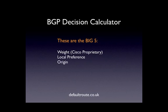Next is origin — how did that route get into the BGP RIB in the first place? We've got three choices. 'I' is internal, meaning someone has actually used the network keyword to push that network into the RIB — so we trust that one the most. Next we'd trust is EGP, a very old legacy protocol, the precursor to EBGP — you don't see it anymore. The last one, trusted least, is called incomplete, represented by a question mark — we'll see that later in the session.